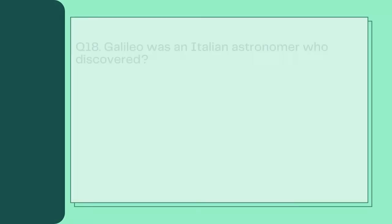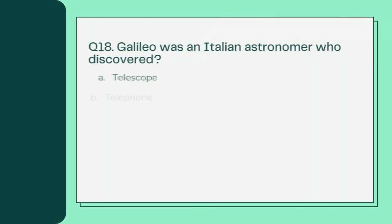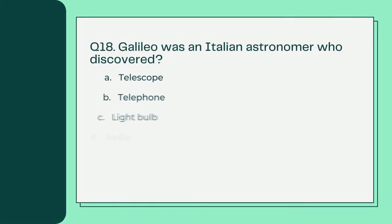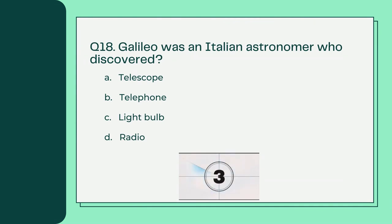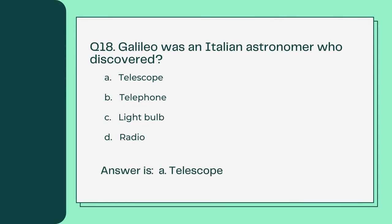Galileo was an Italian astronomer who discovered — A. Telescope B. Telephone C. Lightbulb D. Radio. Answer is A. Telescope.